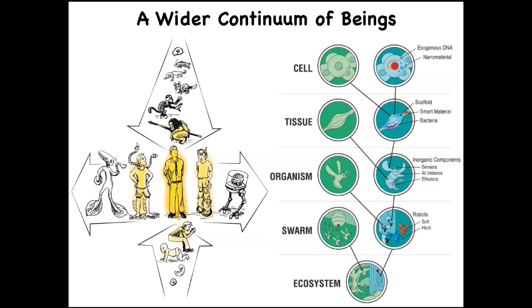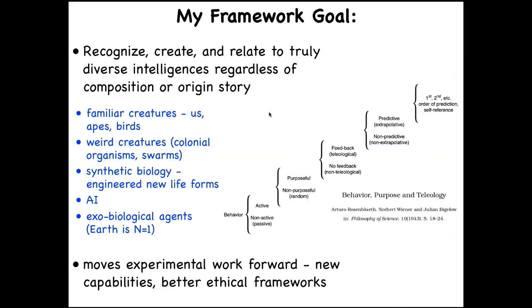Life is very interoperable, and at every level of the hierarchy we can introduce engineered components and make something that has never existed before. I want to develop a framework where we can think about all sorts of agents — apes, birds, whales, octopuses, insects, colonial organisms, swarms, engineered life forms, AIs, embodied robotics, and potentially exobiological agents.